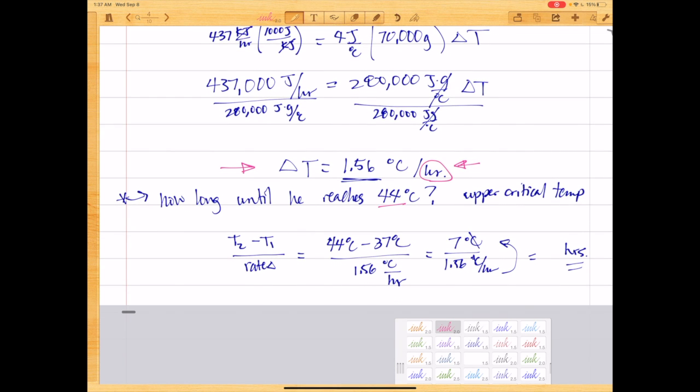So instead of writing delta T equals 1.56 degrees Celsius per hour, we can call this T2 minus T1. And then if we bring it down here, so if we notice delta T is in units of degrees Celsius per hour, and these guys are in units of degrees Celsius. So if we just solve this,